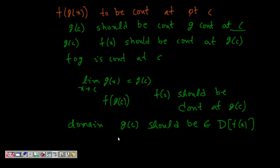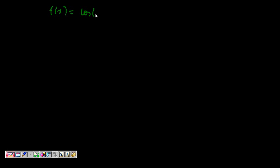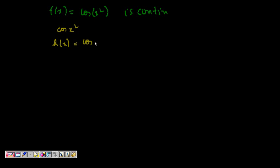Based on this, we will look at some problems. The first problem is: show that f of x equals cosine of x squared is continuous. We can take h of x equal to cosine of x and g of x equal to x squared. Then h of g of x means replacing x in h of x by g of x, which is x squared, giving cosine of x squared. So h of g of x equals f of x.